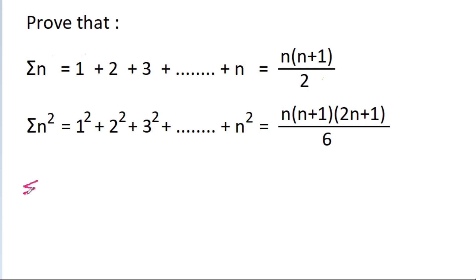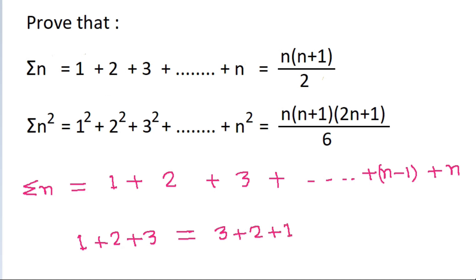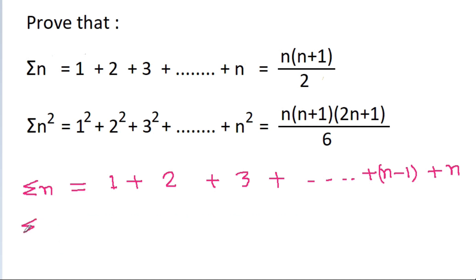So we have sigma(n) is equal to 1 plus 2 plus 3 plus dot dot dot plus n minus 1 plus n. And we know that 1 plus 2 plus 3 is the same as 3 plus 2 plus 1, so we can also write sigma(n) is equal to n plus n minus 1 plus n minus 2 plus dot dot dot plus 2 plus 1.